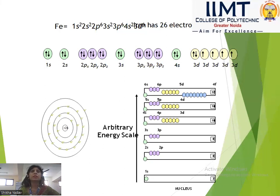Looking at the orbital energy scale: 1s, then 2s, then 2p, then 3s, then 3p, then 4s, then 4p, then 3d, then 5s, 5p, and 4d, and so on.